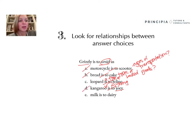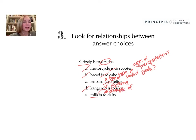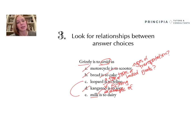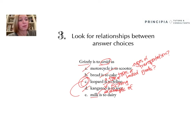E — milk is to dairy. Milk is one example of, or kind of a type of, a dairy product. So could a grizzly be an example of or a type of ursid? Again, that seems maybe possible. So if I had to choose on the SSAT between C and E, I've dramatically increased my chances rather than blindly guessing between the five options. The correct answer for this one actually is C — similar to a leopard being a type of feline, a grizzly is a type of ursid. Ursid is the scientific name for that category of bear.